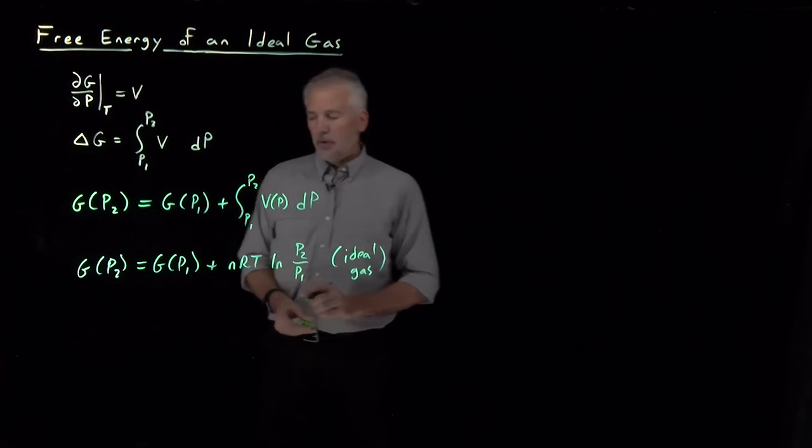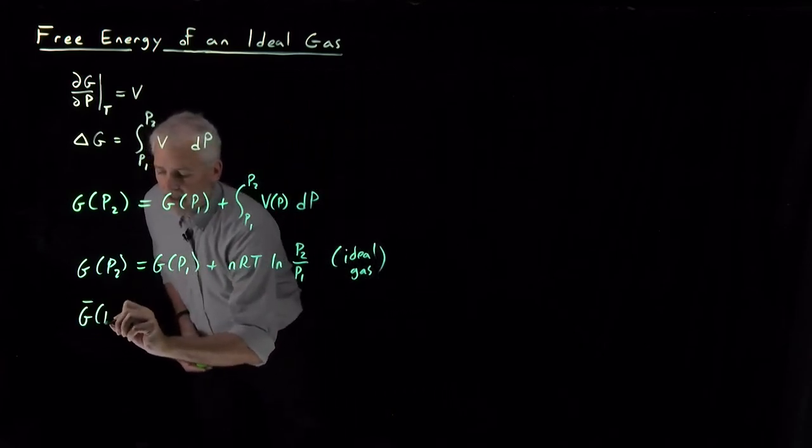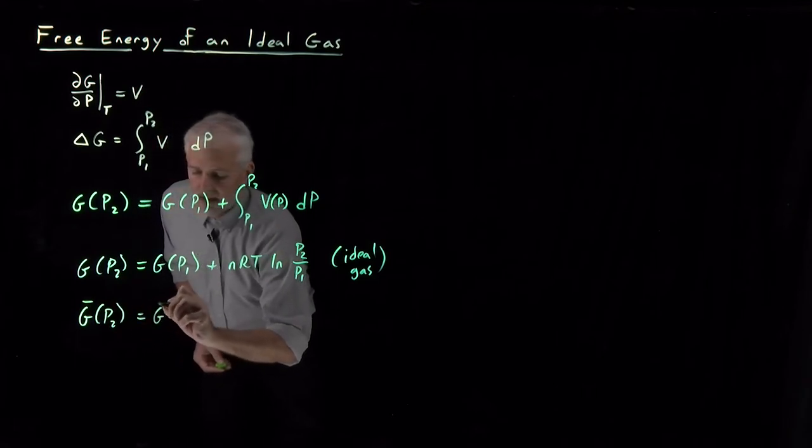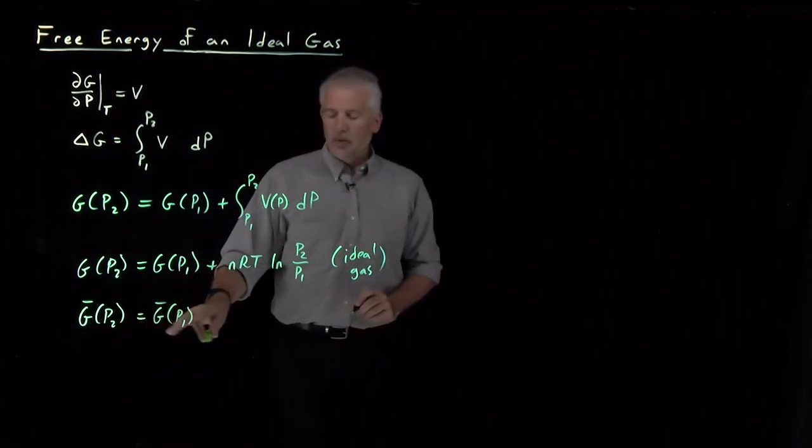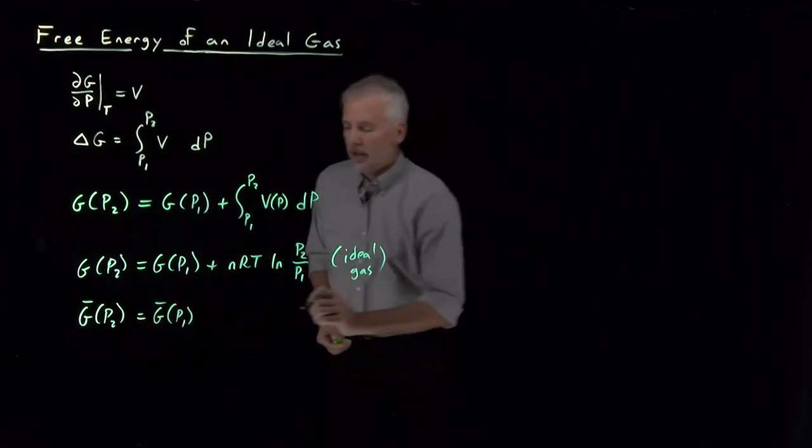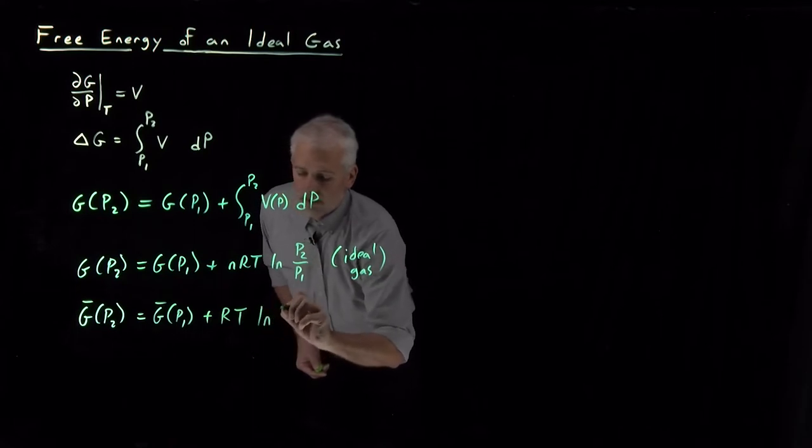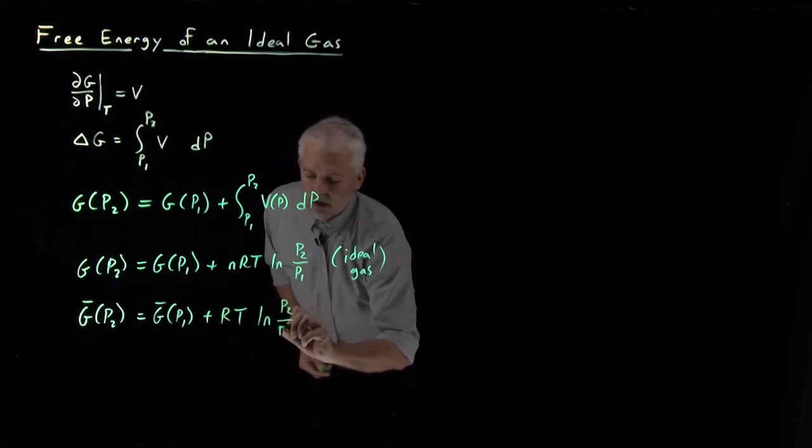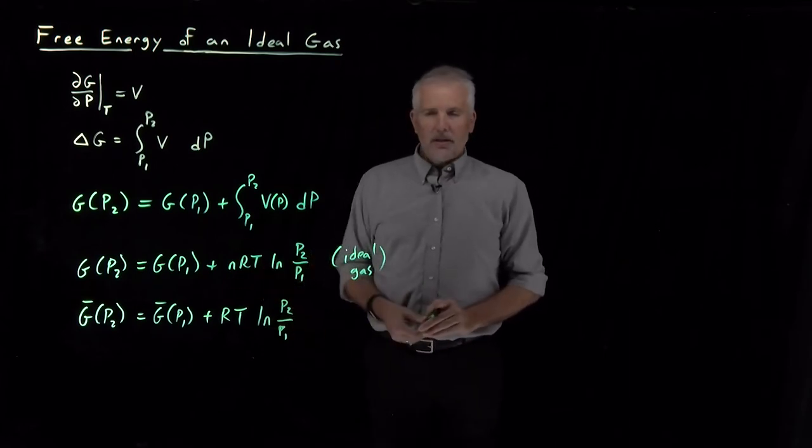If I divide through by n to convert the extensive free energies into intensive, I can say that the Gibbs free energy per mole at P2 is equal to the Gibbs free energy per mole at P1 and then RT log P2 over P1. Those equations are equivalent to one another, just multiply or divide by n to convert between them.